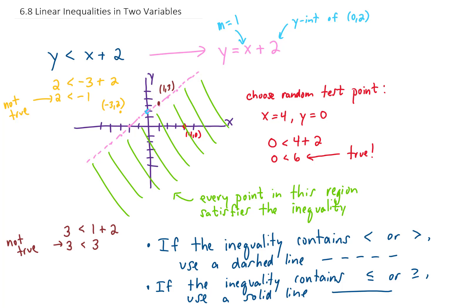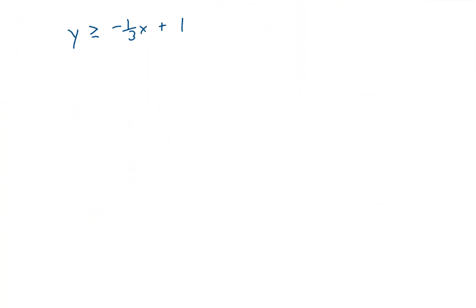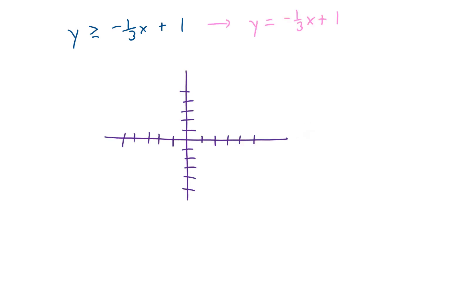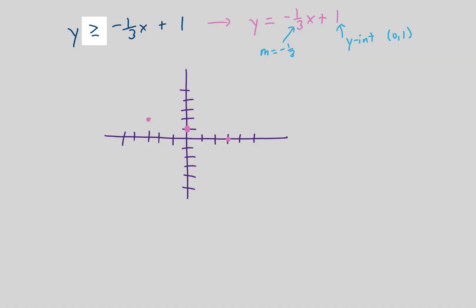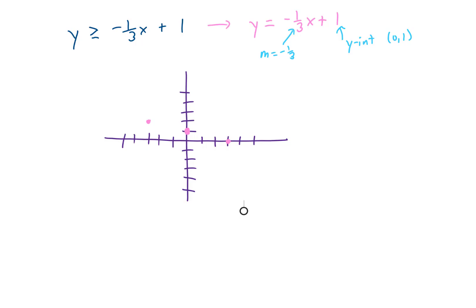Let's do another example: y is greater than or equal to negative one-third x plus 1. Let's graph the line first. This line has a y-intercept of positive 1, so we have a point right here. The slope is negative one-third, meaning if we go down one unit from the y-intercept, we go right three units; or up one unit, we go left three units. Because the inequality has a greater than or equal sign, the equal sign tells us we're going to use a solid line.